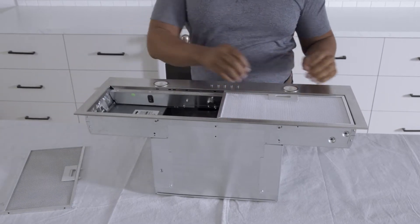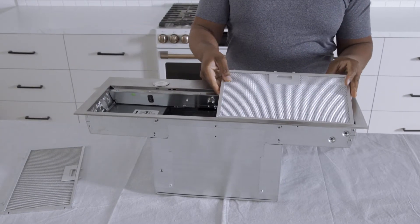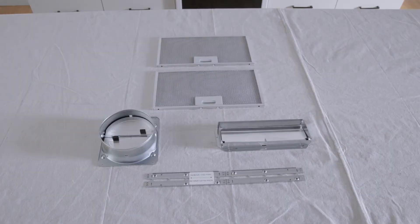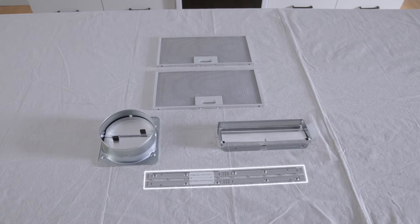Next, remove the components from outside and inside the unit. The unit includes the grease filters, round damper assembly, cabinet brackets, and the rectangular damper assembly.